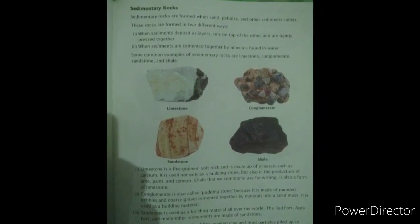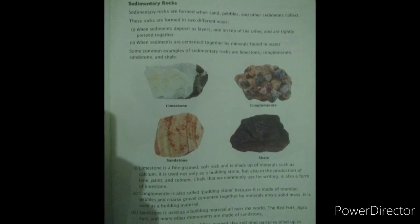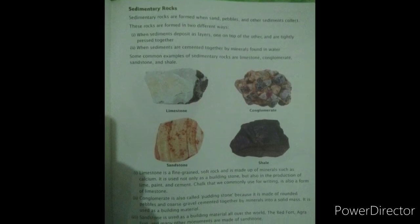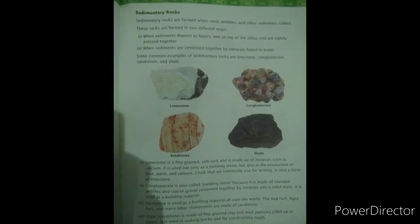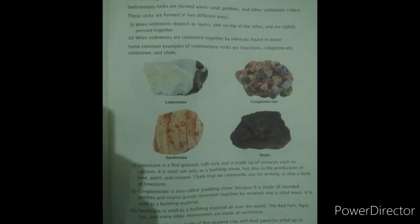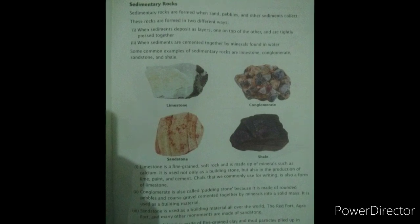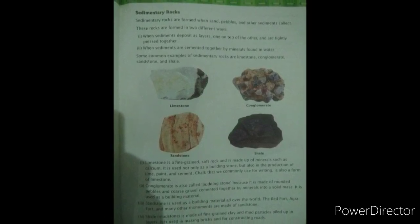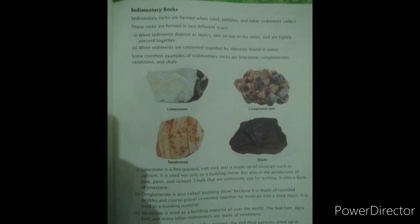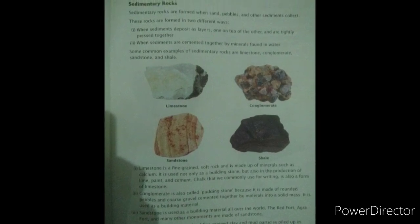Limestone is a fine-grained, soft rock made up of minerals such as calcium. It is used not only as a building stone but also in the production of lime, paint, and cement. Chalk, which we commonly use for writing on boards, is also a form of limestone.